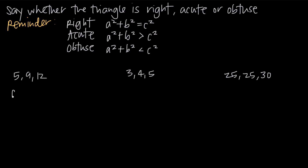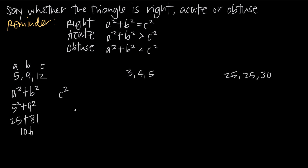We want to find a squared plus b squared and c squared. With a and b as 5 and 9, a squared plus b squared is 5 squared plus 9 squared, or 25 plus 81, which equals 106. With c equal to 12, c squared is 12 squared, or 144. So what's the relationship between a squared plus b squared and c squared? In this case, 106 is less than 144, so a squared plus b squared is less than c squared. Looking at our chart, that means this is an obtuse triangle.